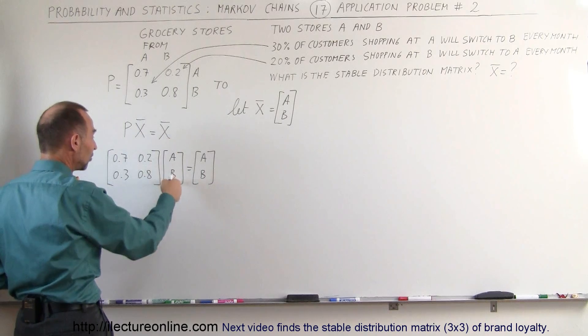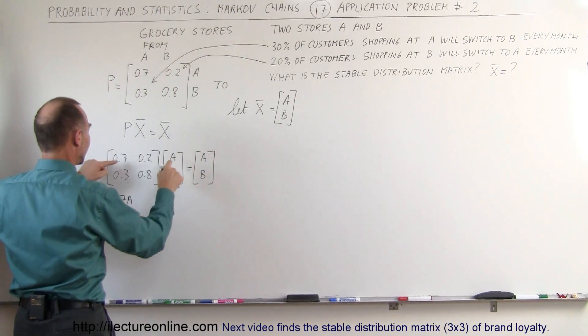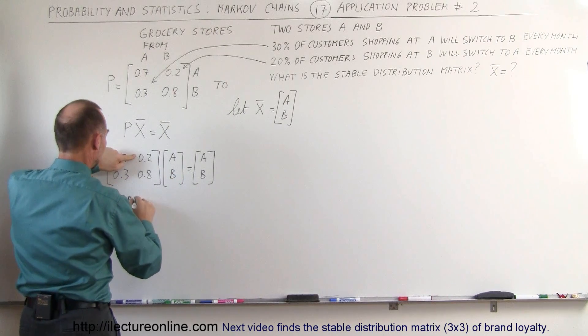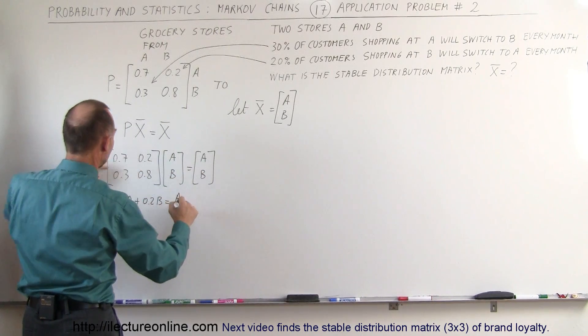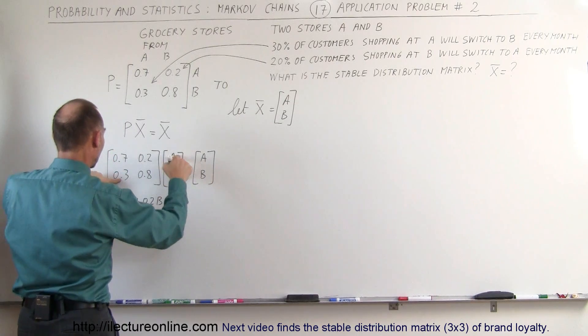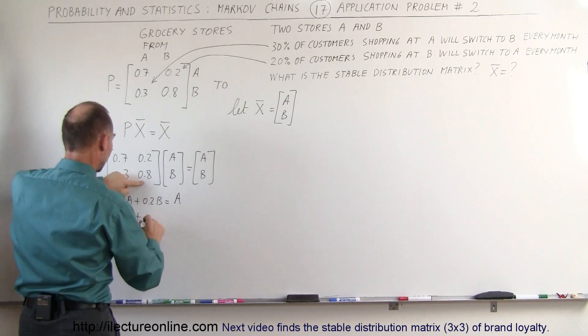We're going to multiply this row times this column to get equal to A. So 0.7A, that's this times this, plus 0.2 times B equals A.